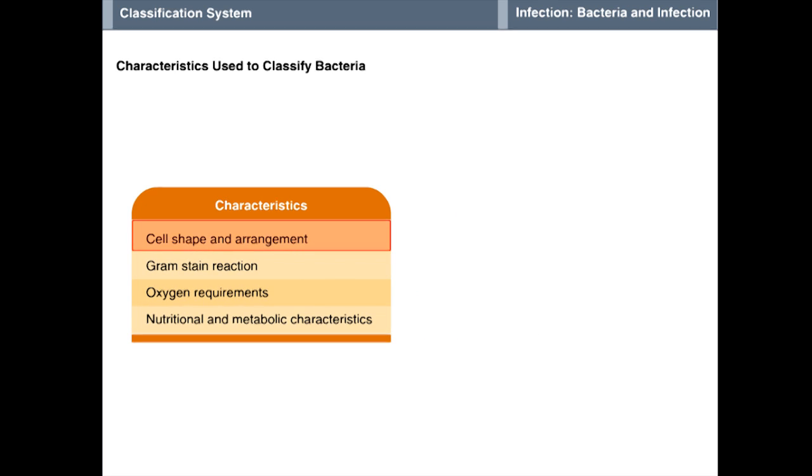Differences in cell shape and arrangement provide an initial clue to the identity of a bacterial genus and species. The three basic shapes of bacterial cells are Coccus (round), Bacillus (rod-shaped), and Spirochete (spiral).